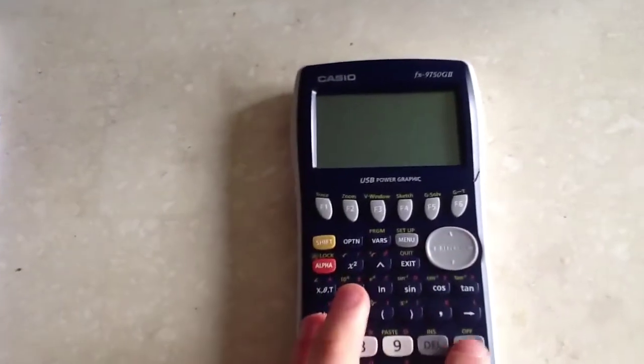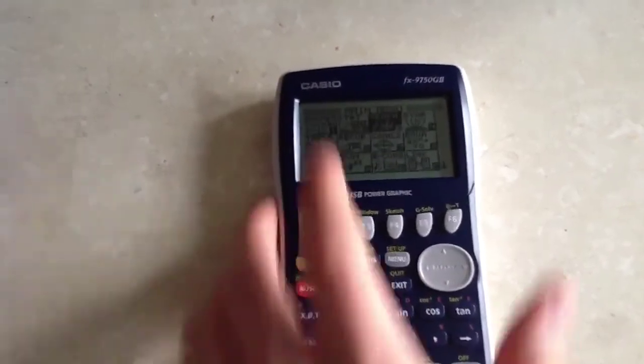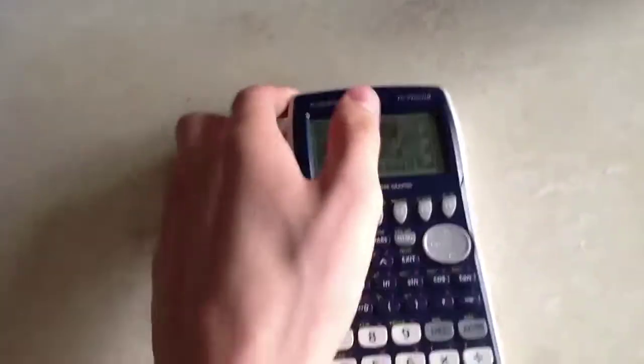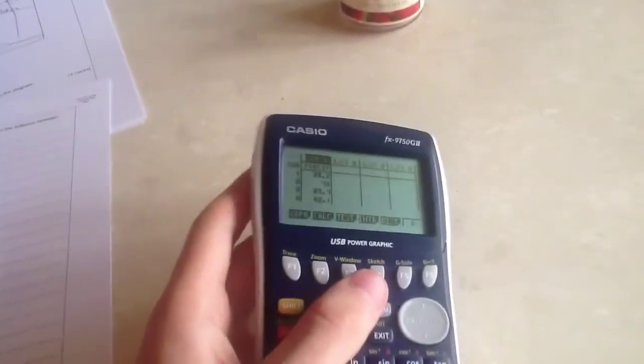The first thing we're going to do is turn on the calculator and click on menu. We get a whole list of options here, so we're going to click on statistics and then click on number 2. When you have done that, you will see a similar table to this.